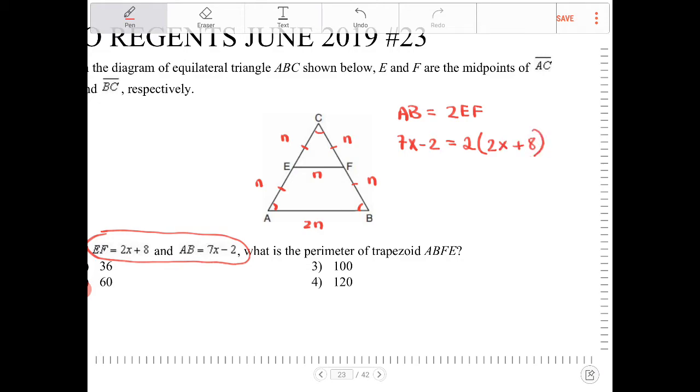Now I have enough information to solve for X, and then in return I will have enough information to solve for AB and EF and so on and so forth. I want to distribute the 2. I get 4X plus 16. 7X minus 2 is on the left. Subtract 4X, I get 3X. Add both sides by 2, I get 18. Divide by 3 on both sides, I get X is equal to 6.